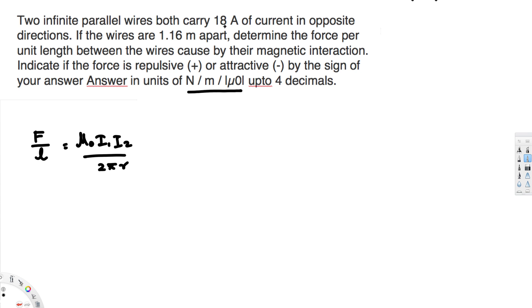They mentioned 18 amperes of current. Both wires carry 18 amperes of current. So I1 and I2 are both going to be 18 amperes.